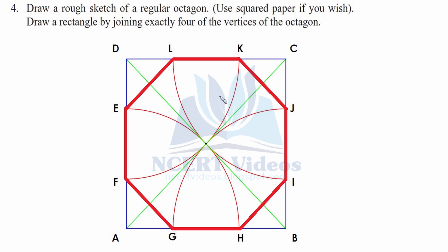Draw the last arc from point D meeting K and F. Connect all these intersection points with straight lines, and you get a regular octagon with equal sides — EL equals LK and so on.